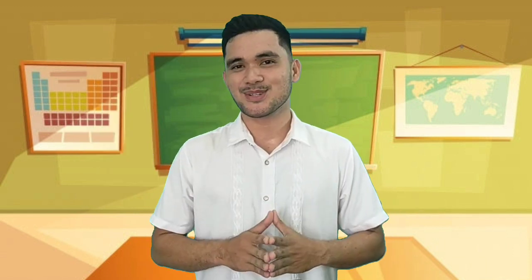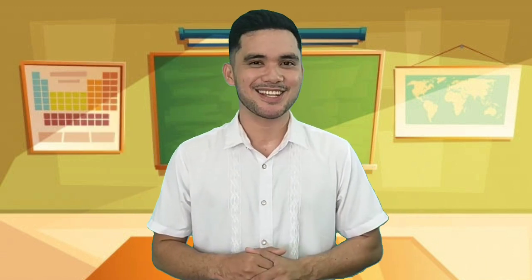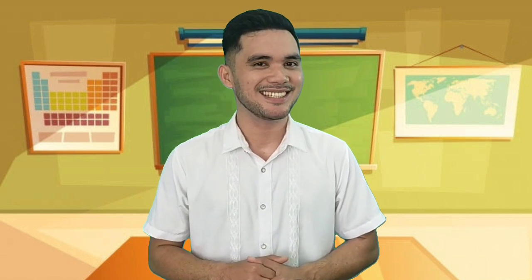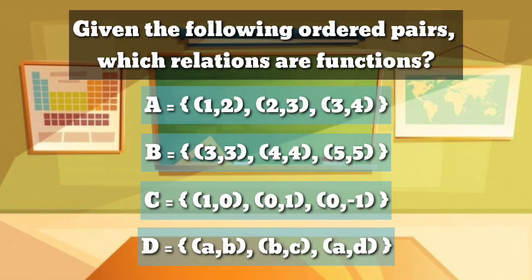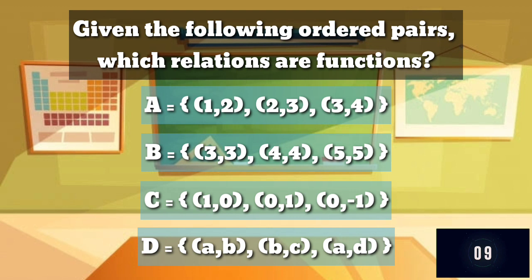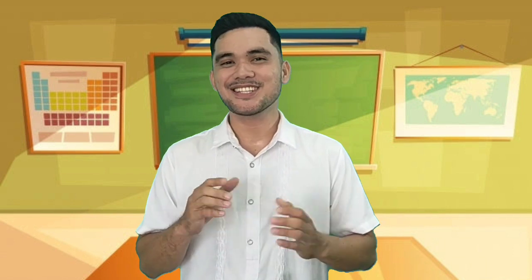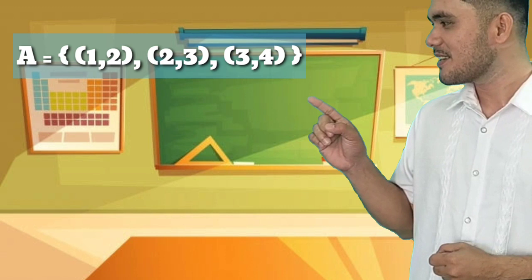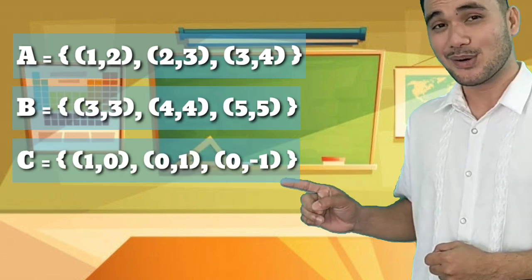Let's try some examples. You will be given 10 seconds to answer. Are you ready? Let's begin. Given the following ordered pairs, which relations are functions? Is it A, B, C, or D?